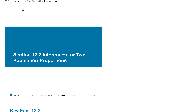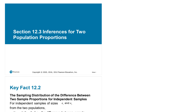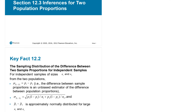Section 12.3: Inferences for Two Population Proportions. Here we're dealing with two population proportions — in the previous two sections it was only one. Here we're going to compare them. It's going to be similar to when we did two population means, where we had mu1 and mu2; here we have p1 and p2.